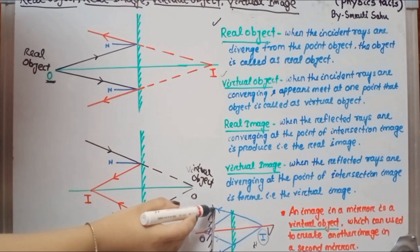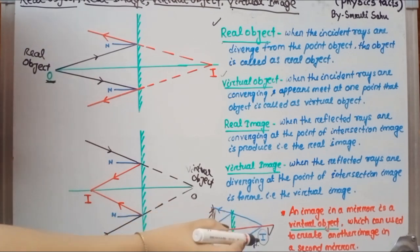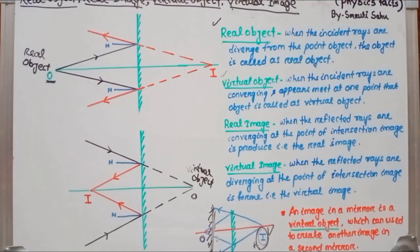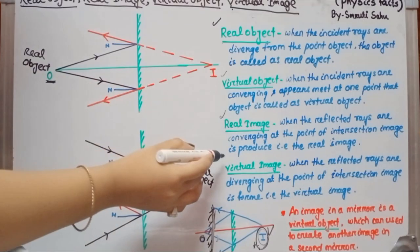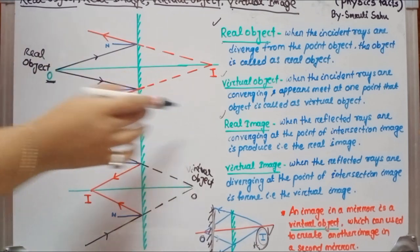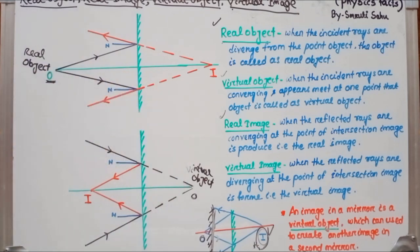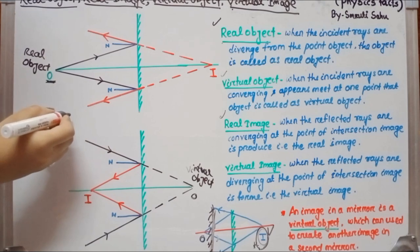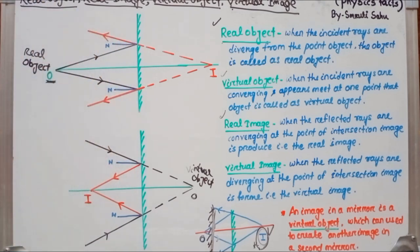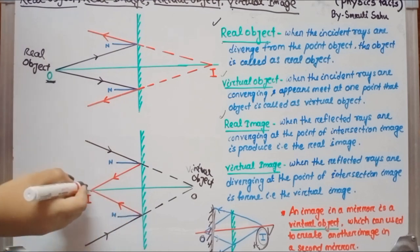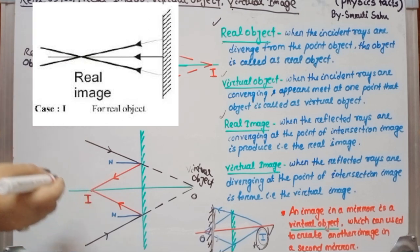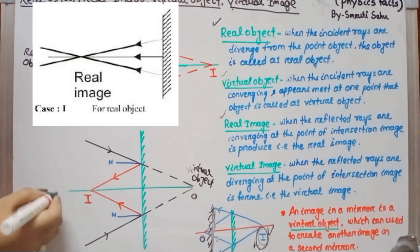This one is the second mirror, and that image acts like a virtual object for it. Now we go to real image and virtual image. In the case of real image, when the two reflected rays converge, or meet at a point, that point of intersection where the image is formed is called a real image.